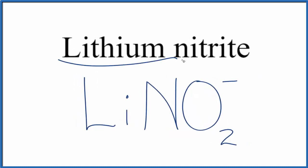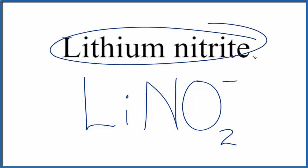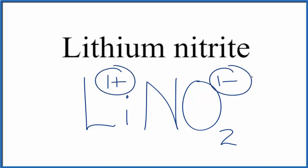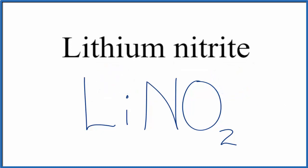Since lithium is a metal and the nitrite ion is a group of nonmetals, we have an ionic compound here, so we need to think about the charge. Lithium nitrite is neutral — it doesn't say ion after it — so the charges need to add up to zero. The nitrite ion is 1 minus. Lithium is in group 1 on the periodic table, so it's 1 plus. 1 plus and 1 minus adds up to zero, giving us a net charge of zero. So the formula for lithium nitrite is LiNO₂.